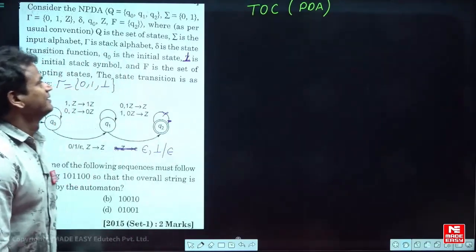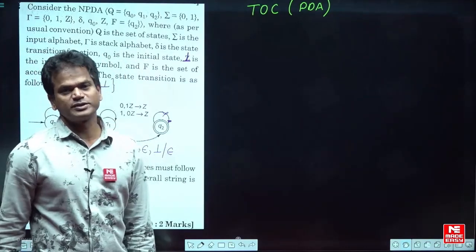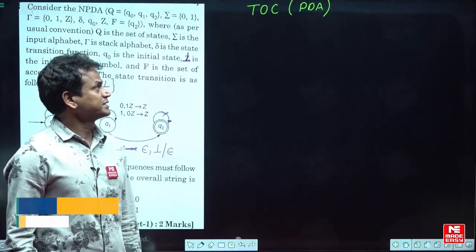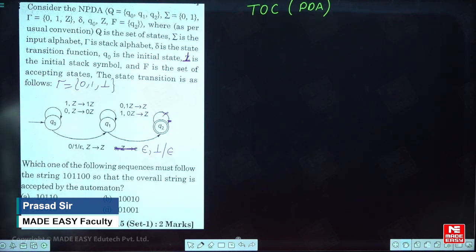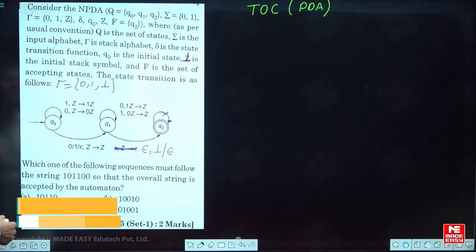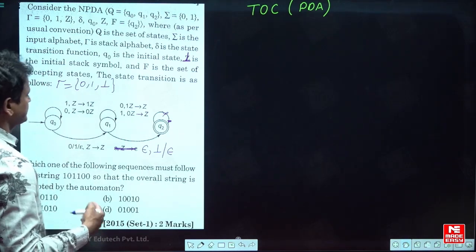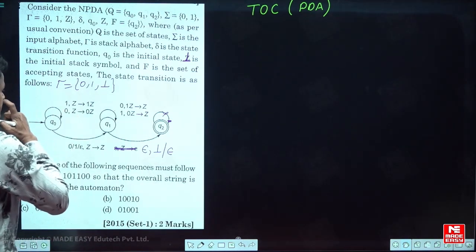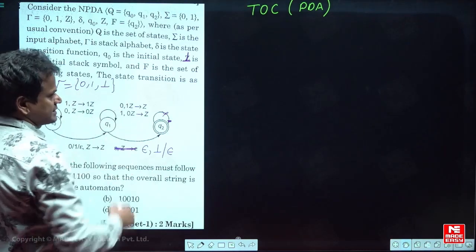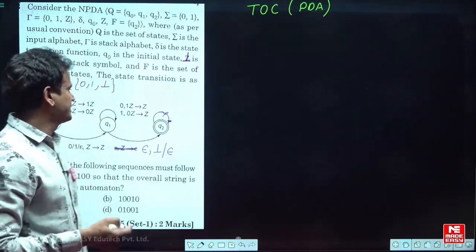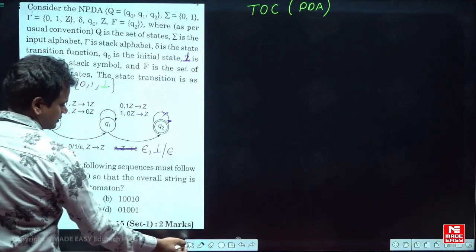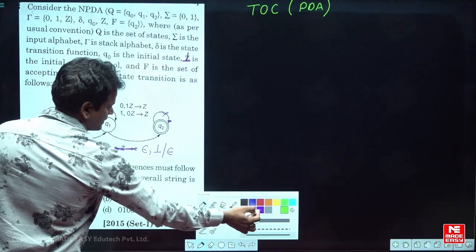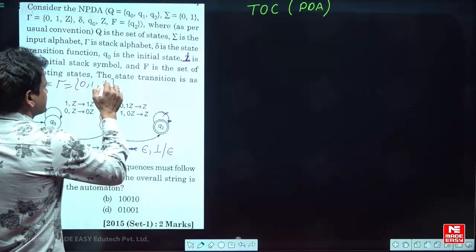Hello, this is a 2015 GATE question. Subject is TOC and the topic is Pushdown Automata. Here, they have given one diagram. The input symbols are 0 and 1. The stack symbols are also 0 and 1. Z means any symbol on top of the stack, and ⊥ (perpendicular) is the initial stack symbol.